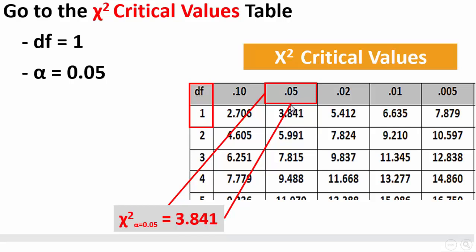This is the row for the degree of freedom equals to 1. They meet at this cell, which has the value 3.841.